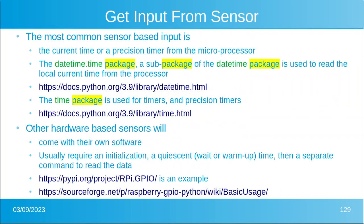Let's get input from a sensor. The most common sensor input is going to be the current time or some kind of position timer from the processor. The datetime.time package, which is a sub-package of datetime, is used to read the local current clock time — what you would read on your watch. The time package — and I hate that name, I really think it should be called the timer package — is used for timers and precision timers. But those are two separate packages.